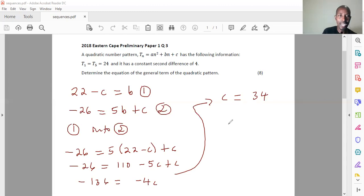Then I can find b now that I know what c is. So I can use equation number one to find my b. So it says 22 minus c is equal to b. So it's going to be 22 minus 34 is equal to b. So b at the end of the day becomes equal to negative 12.